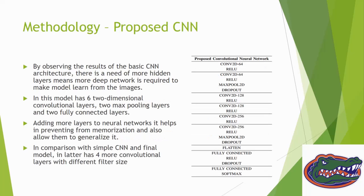Observing the results of basic CNN architecture, there is a need for more hidden layers, meaning a deeper network is required to make the model learn from images. Compared with previous CNN, the proposed CNN has four more convolutional layers with different filter sizes. It has six 2D convolutional layers, two max pooling layers, and two fully connected layers. Adding more layers helps the model prevent memorization and allows it to generalize better.